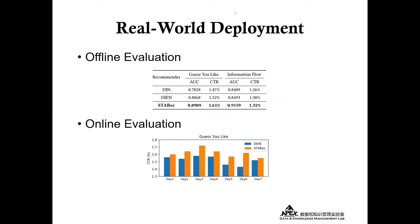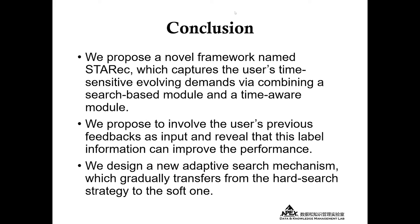Both offline and online results show the effectiveness of our module. In conclusion, we offer three main contributions. First, we propose a novel framework named StarRack, which captures the user's time-sensitive evolving demands by combining a search-based module and a time-aware module. Second, we propose to involve the user's previous feedback as input and reveal that this label information can improve performance. Third, we devise a new adaptive search mechanism which gradually transforms from hard search to soft search.